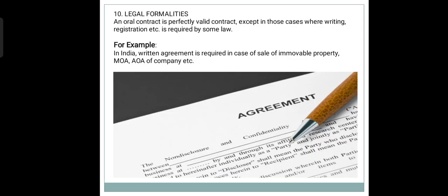Last is Legal Formalities. Any oral contract is perfectly valid except in those cases where writing or registration is required by any other law in force. For example, in India, written agreement is required in case of sale of immovable property or while forming the memorandum of association and articles of association of companies. In case of sale, mortgage, lease, and gift of negotiable instruments, it should be written. If any law prescribes legal formalities, then it should be complied with — only then it can be a valid contract.